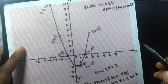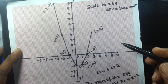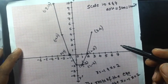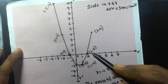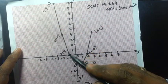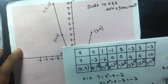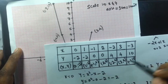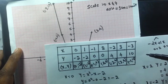So for the table of values, you will get half marks, and for the graph you will get one mark. Totally four marks you are going to get.